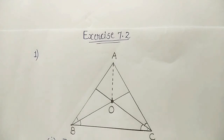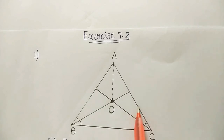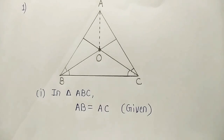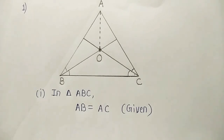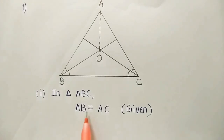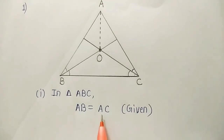Let us start. In the question, it is already given that AB is equal to AC because it is an isosceles triangle. So we will write that first. In triangle ABC, AB is equal to AC (given). Now we have learnt theorem 7.2: angles opposite to equal sides of an isosceles triangle are equal. Here it is an isosceles triangle, and two sides AB and AC are equal.